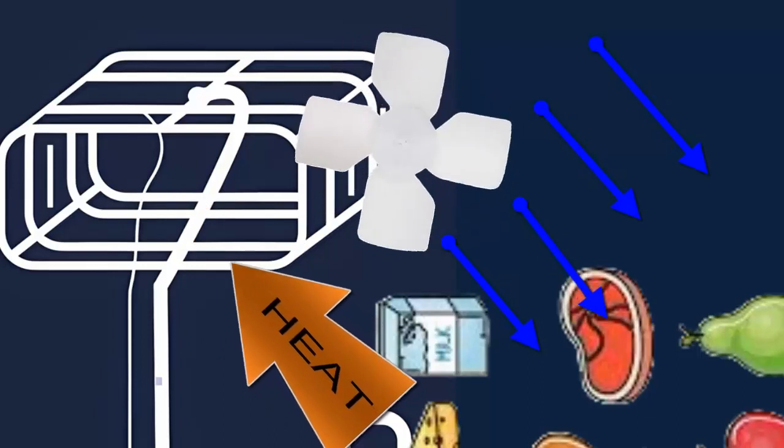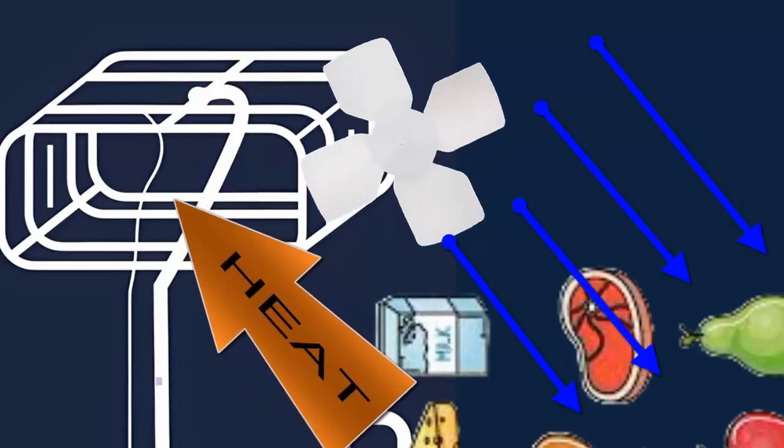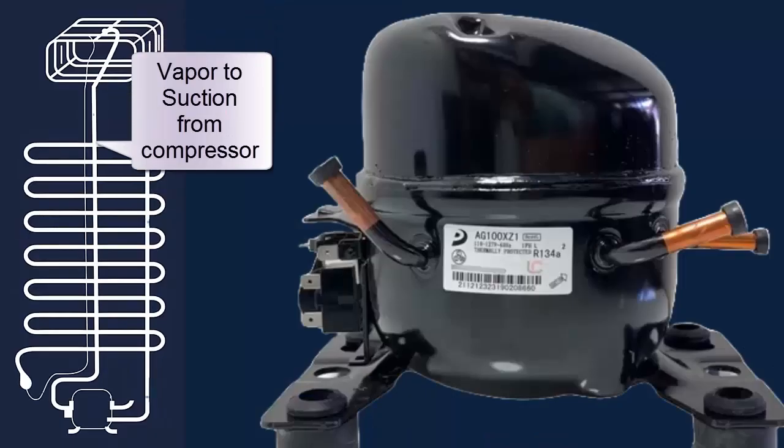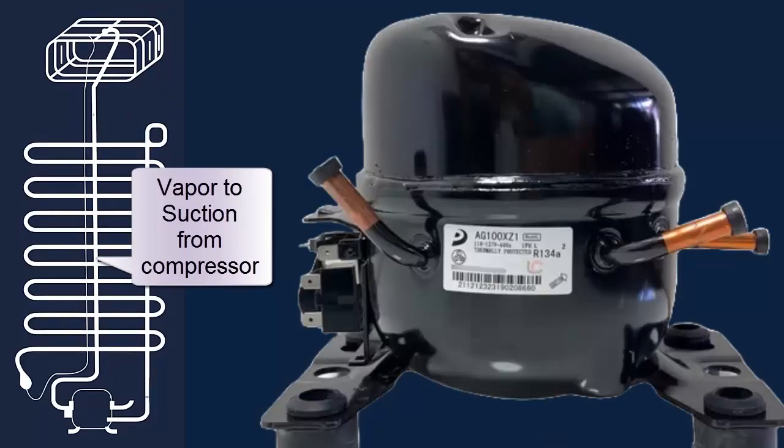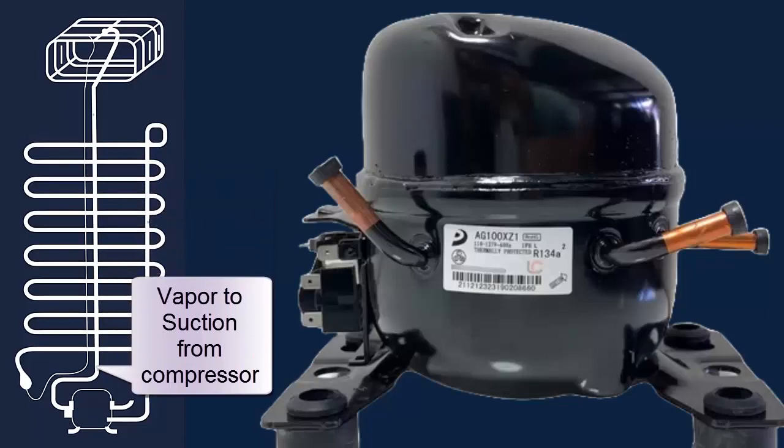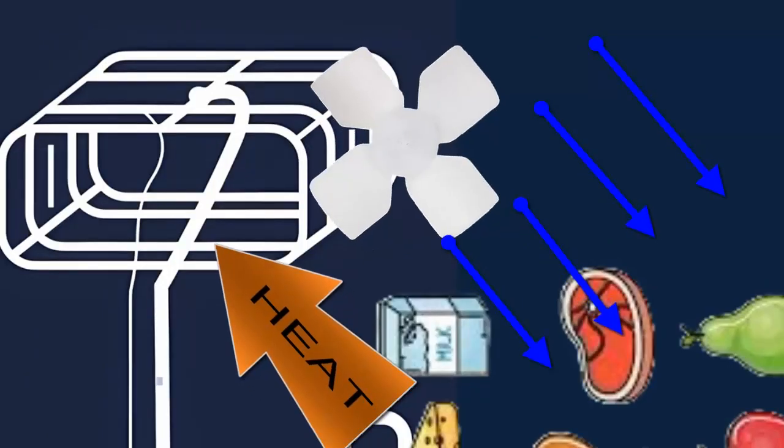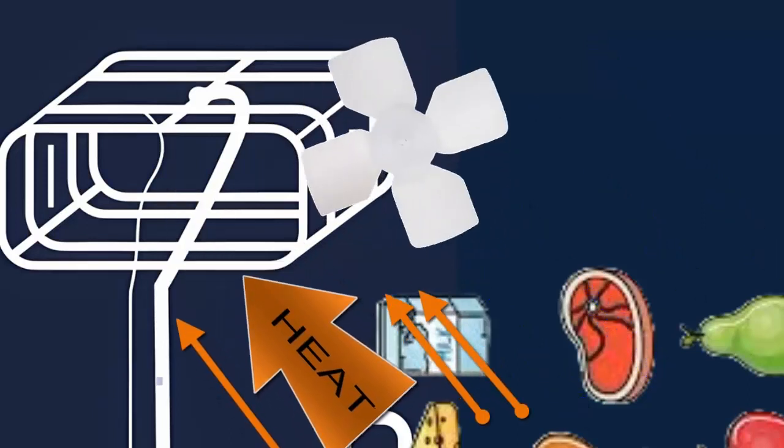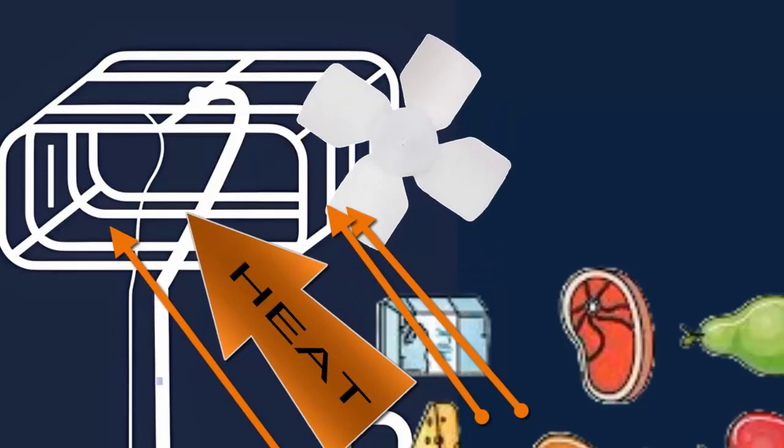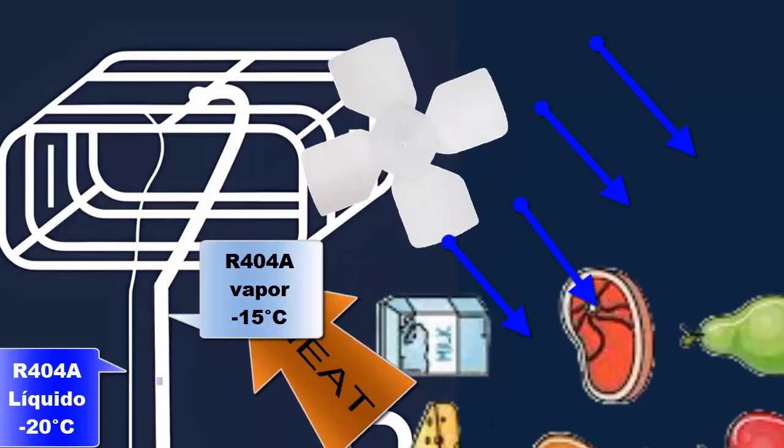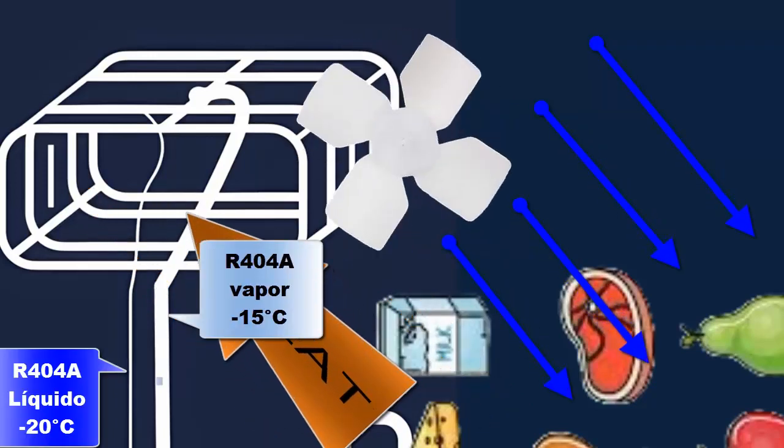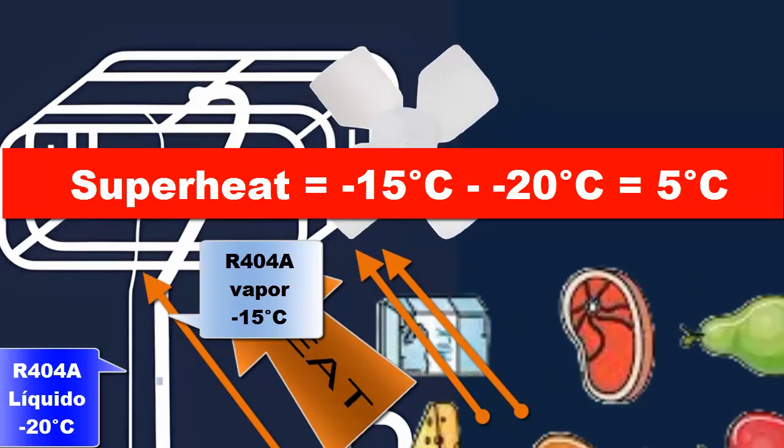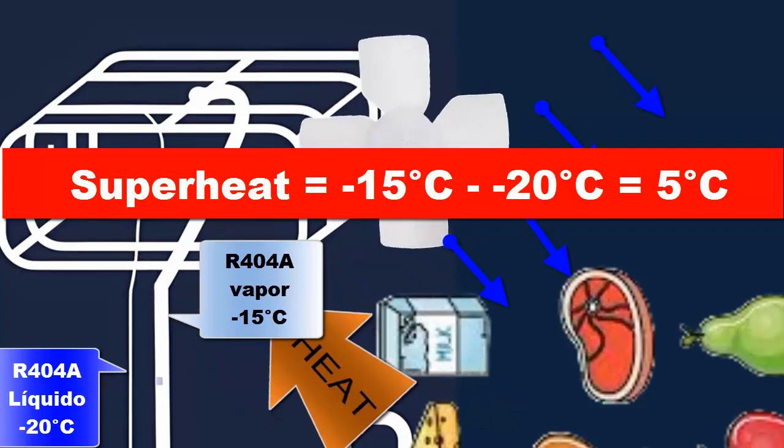The R404A, now in a gaseous state, and with a slight temperature increase called superheat, is suctioned by the compressor. For this case, let's assume that the temperature of the R404A refrigerant in a gaseous state is minus 15 degrees Celsius. This means that the R404A refrigerant goes from minus 20 degrees Celsius to minus 15 degrees Celsius, so in this equipment, the superheat is 5 degrees Celsius.